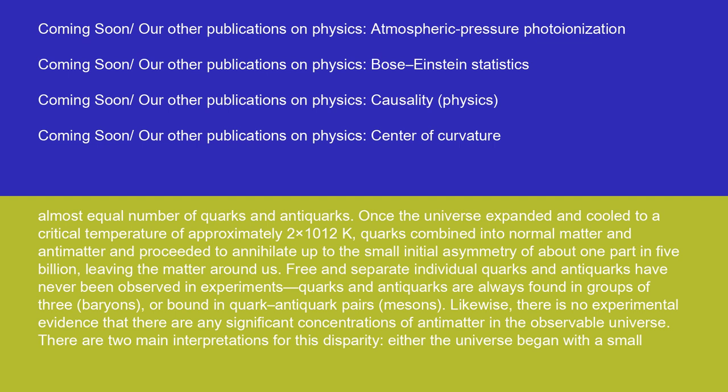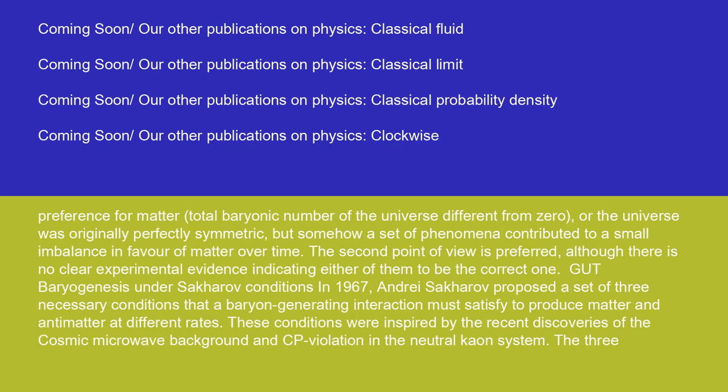Once the universe expanded and cooled to a critical temperature of approximately 2×10¹² K, quarks combined into normal matter and antimatter and proceeded to annihilate, up to the small initial asymmetry of about 1 part in 5 billion, leaving the matter around us. Quarks and antiquarks are always found in groups of 3 (baryons) or bound in quark-antiquark pairs (mesons). There is no experimental evidence that there are any significant concentrations of antimatter in the observable universe. Two main interpretations exist: either the universe began with a small preference for matter (total baryonic number different from zero), or the universe was originally perfectly symmetric but a set of phenomena contributed to a small imbalance in favor of matter over time.